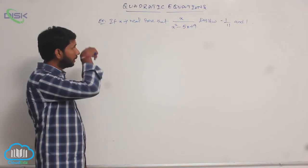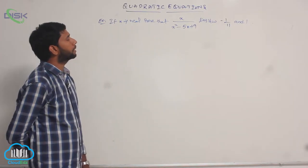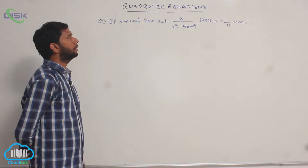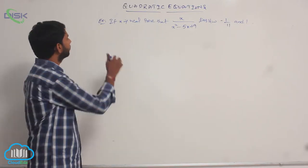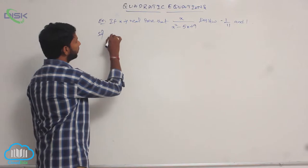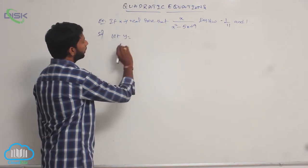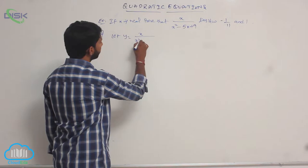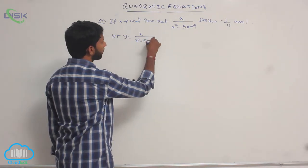The next example: if x is real, prove that x divided by (x² - 5x + 9) lies between -1/11 and 1. Let us consider the given function f(x) = x / (x² - 5x + 9).